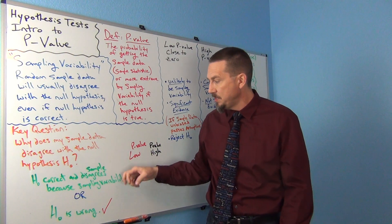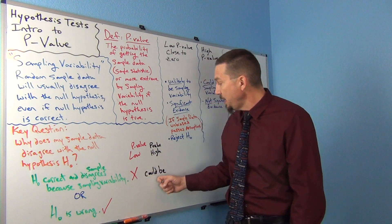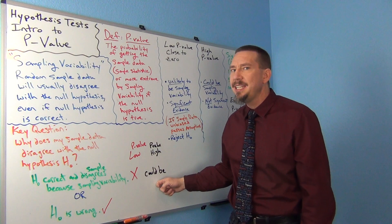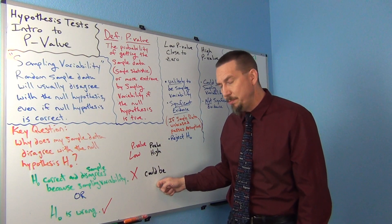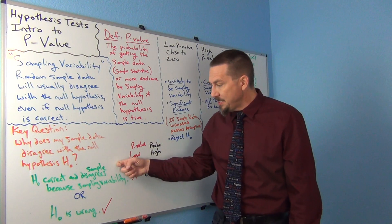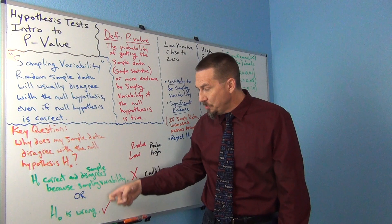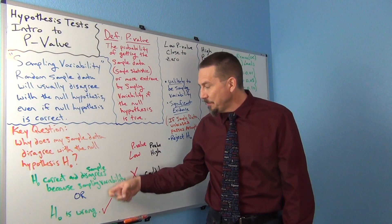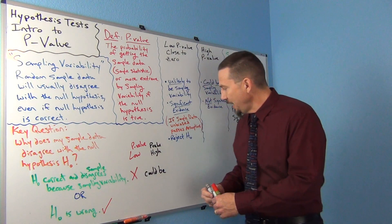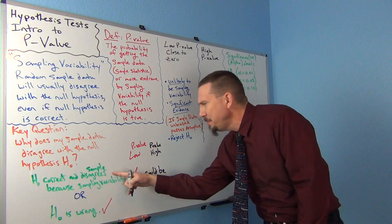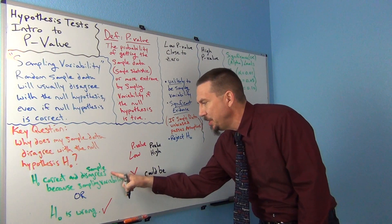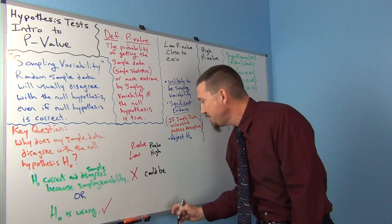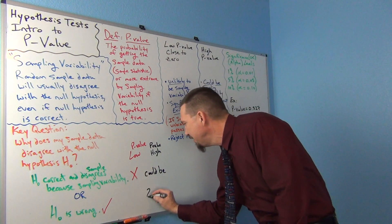If my data disagree with the null hypothesis, the answer might be sampling variability, but it doesn't guarantee that it is. It just says it could be. It could be sampling variability, or it could be that the null is wrong. I don't know what the answer to this question is.